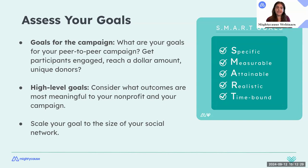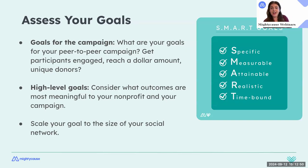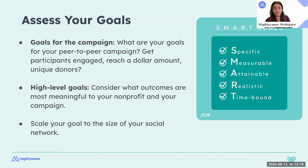Some high-level goal examples: we're looking to purchase a thousand backpacks for students in need, or we want to provide 10,000 meals within the next year. You also want to scale your goal to the size of your social network. Everyone has a different size social network — some are brand new nonprofits with a small network, for others it may be larger. Think about what is reasonable and possible for your organization right now.